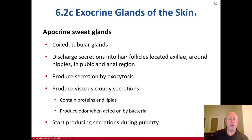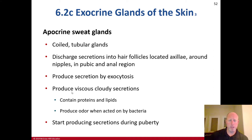The apocrine glands are coiled tubular glands. They discharge secretions into the hair follicles, located in the axillae, around the nipples, and the pubic and anal region as well. They produce secretion by exocytosis as well, and they produce a viscous, cloudy secretion — unlike sweat, which is more watery. It contains proteins and lipids, and it produces an odor when acted on by bacteria. That's typically what you smell under armpits and in the pubic regions and anus, and it's due more to the apocrine gland secretions.